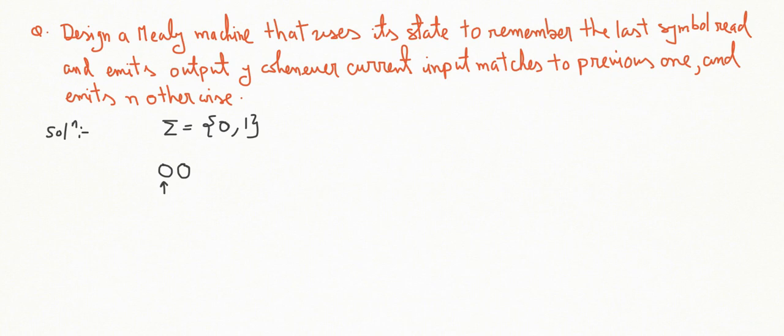Suppose 1, 1—again this input symbol matches with the current one, output will be Y.